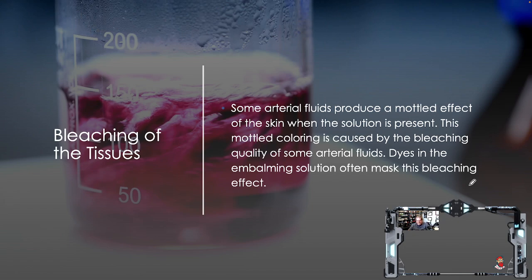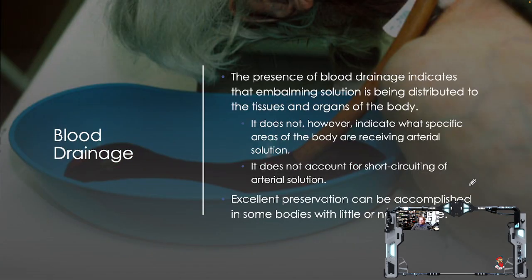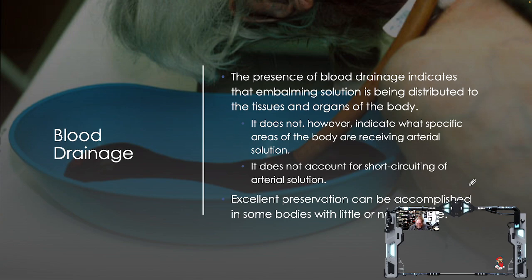Some arterial fluids produce a mottled effect of the skin when the solution is present; dyes in the embalming solution often mask this bleaching effect, which is why you should rely on the dyes. The presence of blood drainage indicates embalming solution is being distributed to the tissues and organs, but it does not indicate what specific areas are getting it and does not account for short-circuiting. Excellent preservation can be accomplished with little to no drainage in some bodies. If you're getting drainage, pay attention to dye distribution, and also look at your embalming tank to see how much fluid has actually entered the body.